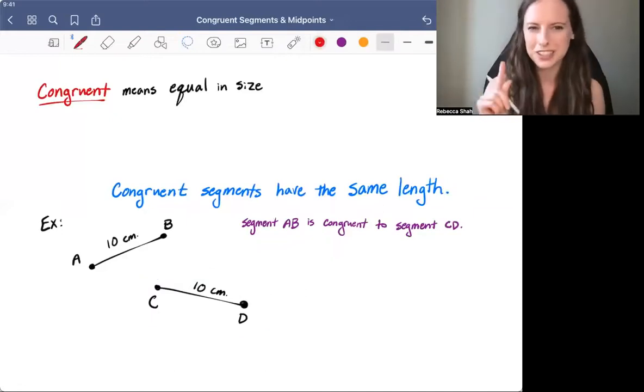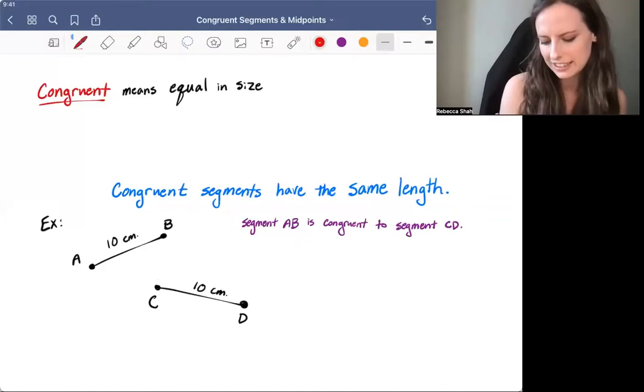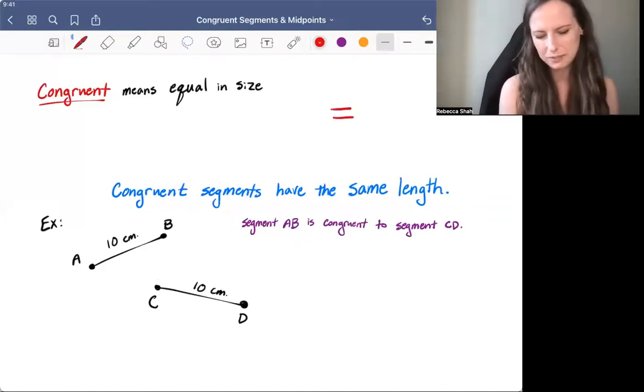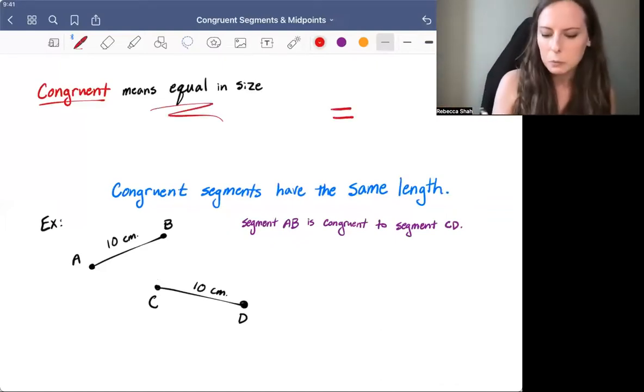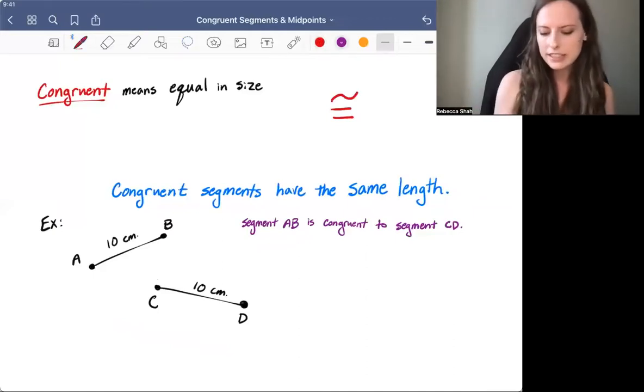Now, the cool thing about the word congruent is it has its own special symbol. That symbol looks like this. It's an equal sign, which kind of makes sense because it means equal, with a little squiggly above it. Whenever we see that symbol, it actually means the words 'is congruent to.'